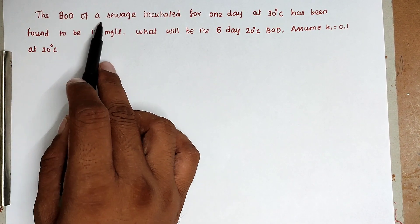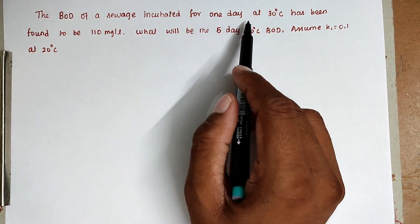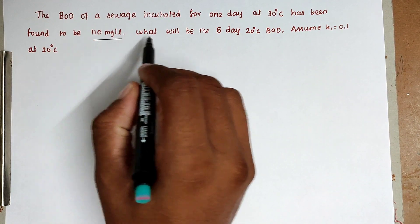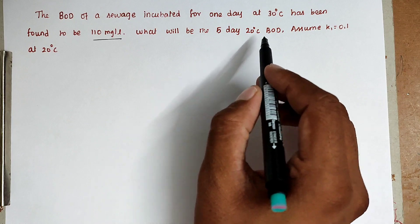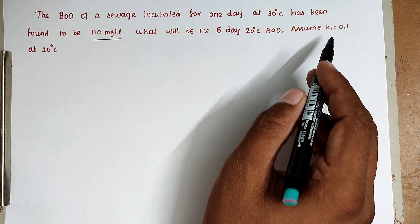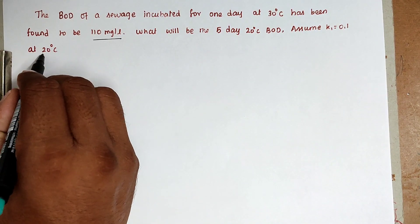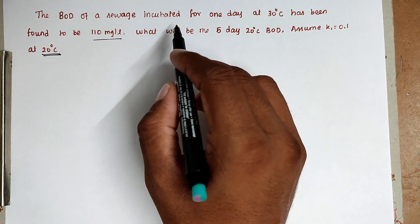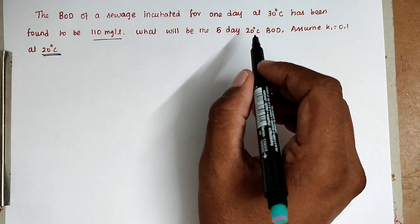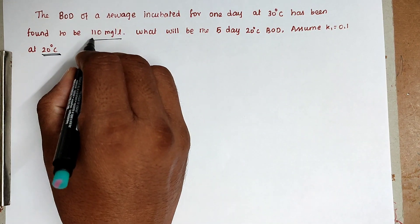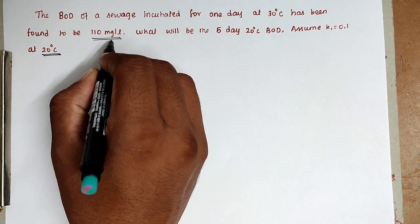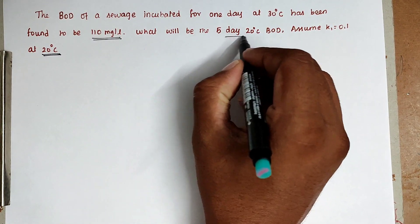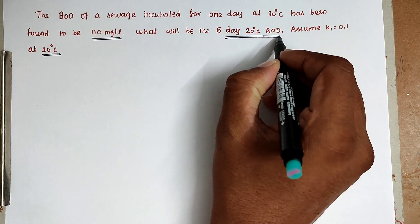The problem is: the BOD of sewage incubated for 1 day at 30 degree Celsius has been found to be 110 milligram per liter. What will be the 5-day 20 degree Celsius BOD? Assume K1 equal to 0.1 at 20 degree Celsius. So if the wastewater sample is incubated 1 day at 30 degree Celsius, the BOD found is 110 milligram per liter. The same sample will be incubated for 5 days at 20 degree Celsius — what is the BOD? This is the question.